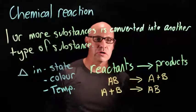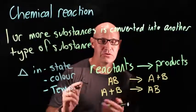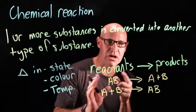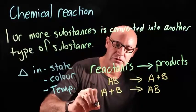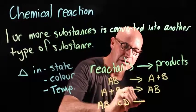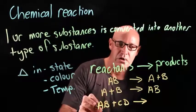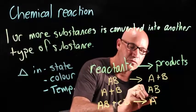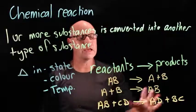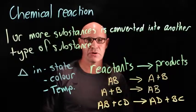Or we might have a type of reaction where the molecules, or the atoms in a molecule, change place. So we might have AB plus CD that has a chemical reaction where A then forms with D and B with C. All of these are different types of chemical reactions.